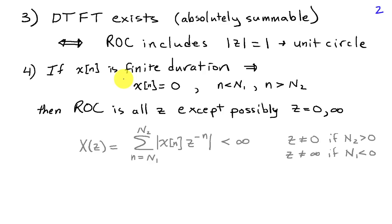Next, if x of n is a finite duration sequence, in other words, it's zero outside of some interval n1 to n2, so for lower case n less than capital N1, for lower case n greater than capital N2, we're assuming that x of n is zero. Well, in this case, the ROC is all the Z-plane except possibly Z equals zero or infinity.